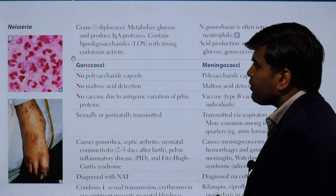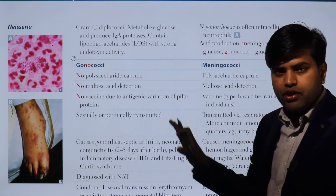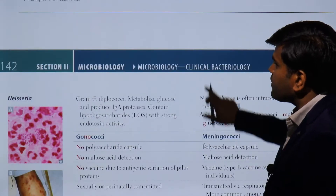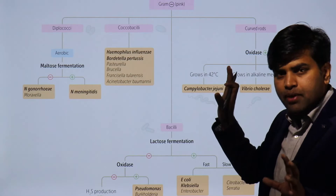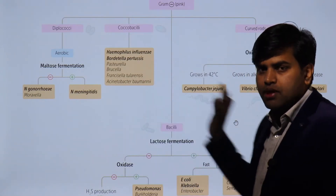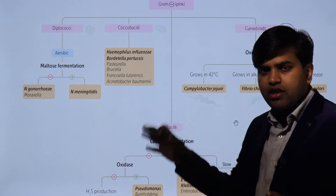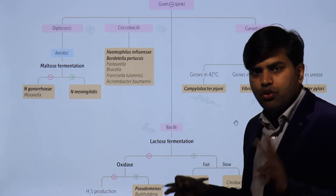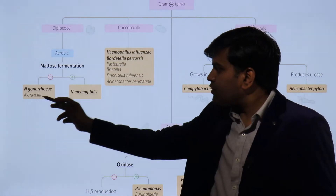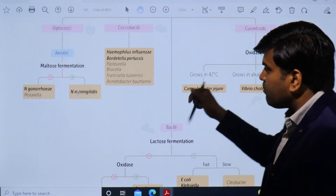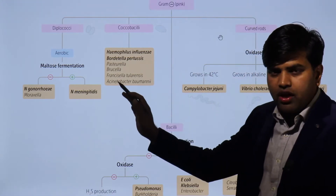Good morning everyone. Today we are moving forward in the gram-negative bacteria section, page 142 of USMLE Step 1 2021 microbiology section. In the previous lecture we talked about gram-negative bacteria — which gram-negative organisms are pink in color — and divided them into cocci and bacilli groups. In the cocci group there were only a few to remember: Neisseria and Moraxella. Among Neisseria there are only two species — N. meningitidis and N. gonorrhoeae — differentiated by maltose fermentation. M for maltose, M for meningitidis: N. meningitidis ferments maltose whereas N. gonorrhoeae does not.